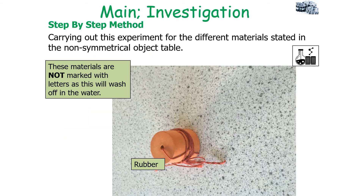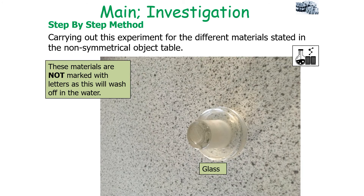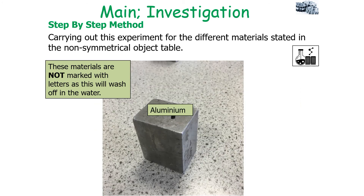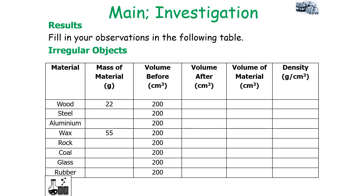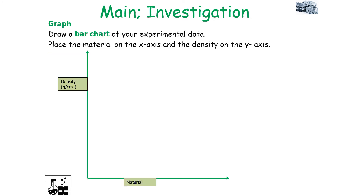You then carry this out for many different materials — for example, rubber, glass, coal, steel, aluminium, and rock. You then record your observations in a results table. You have to measure the mass of the object, the volume before the object is placed in the liquid, and the volume after. Then work out the volume of the material by doing volume after minus volume before, and calculate density as mass over volume.